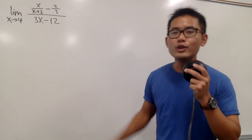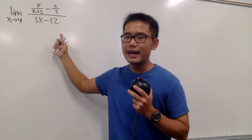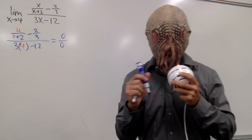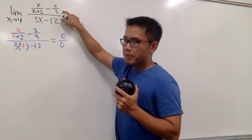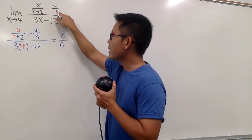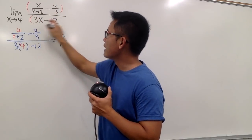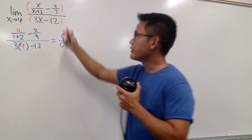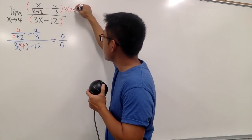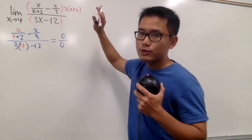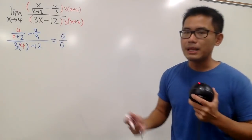Now we have another limit question. As a good habit, we plug in the number first — we get 0 over 0, so we have to do more work. We have a complex fraction situation. Look at the denominators of the small fractions: we have the 3 and the x plus 2.